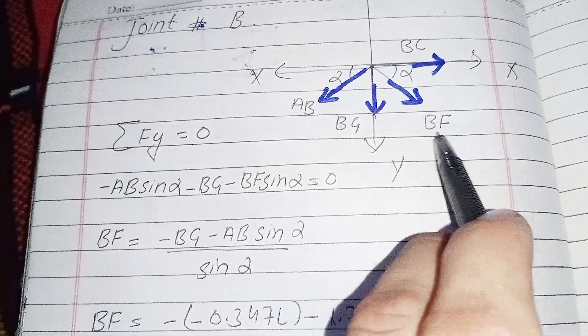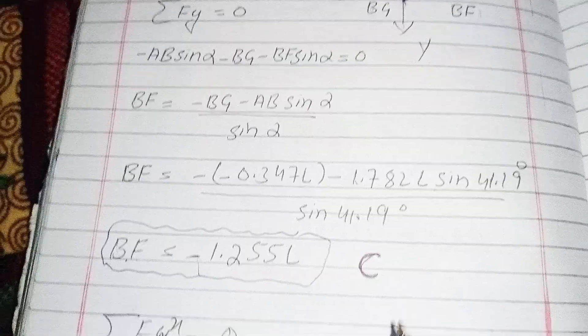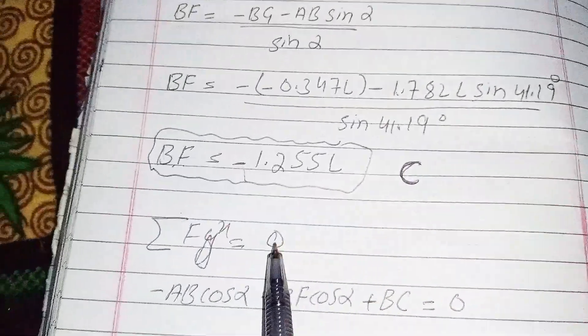The negative sign shows that BF is not in tension — my assumption was wrong — it is in compression.